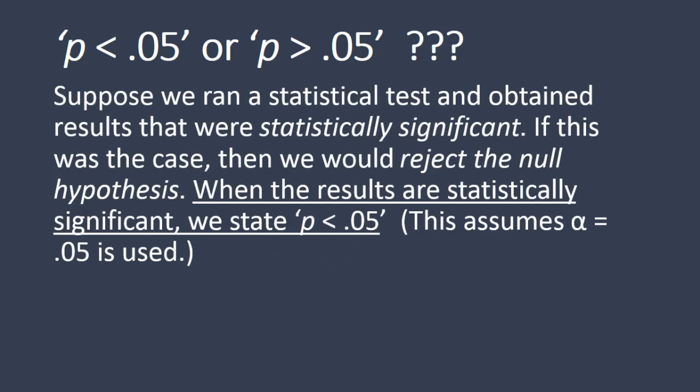Suppose that we ran a statistical test and we obtained results that were statistically significant. If this was the case, then we would reject the null hypothesis. So when the results are statistically significant, we state P is less than 0.05. In other words, when we reject the null hypothesis, we state P is less than 0.05. This assumes that an alpha of 0.05 is used.